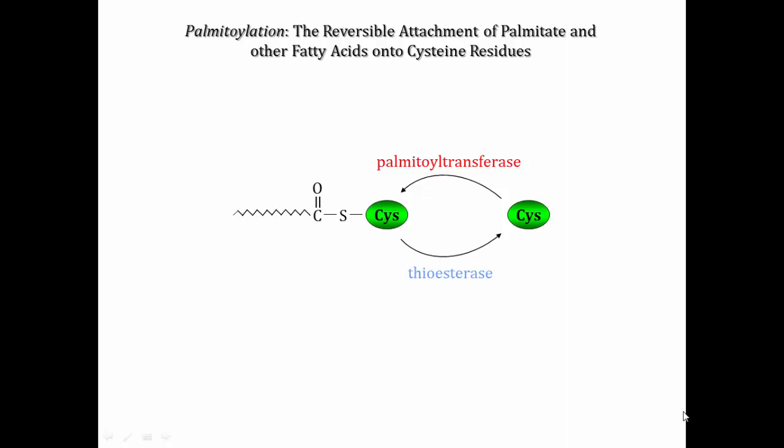Current estimates suggest that several hundred proteins undergo this modification. This process, also known as S-acylation, involves the reversible attachment of palmitate and other fatty acids onto cysteine residues in specific proteins. Palmitoylation dynamics are mediated by the opposing actions of palmitoyltransferase enzymes and thioesterases.